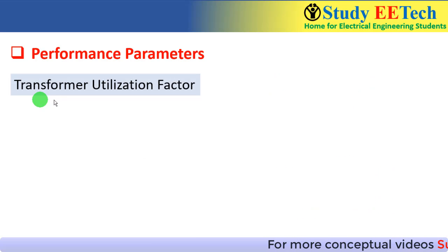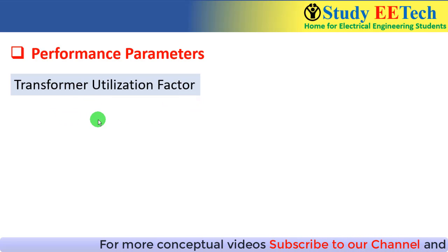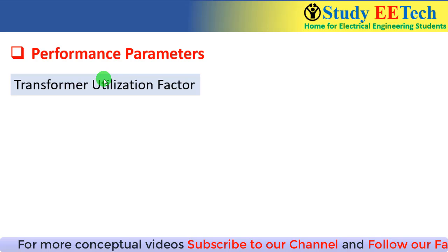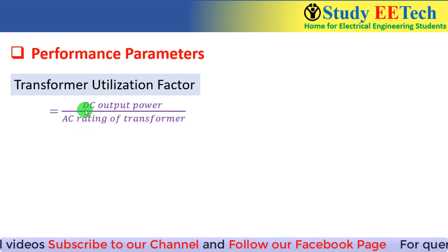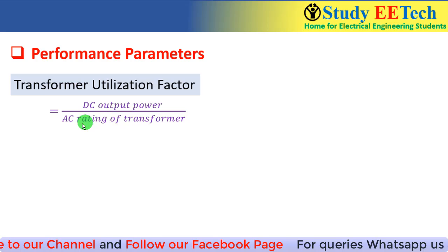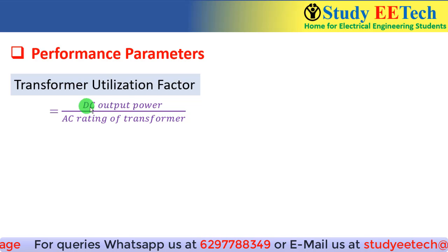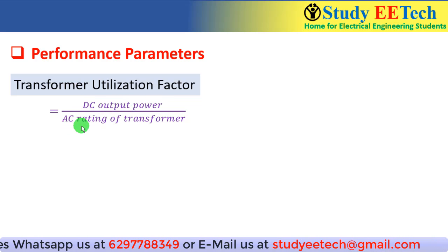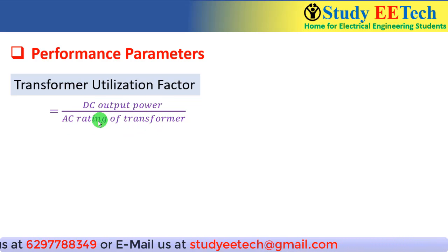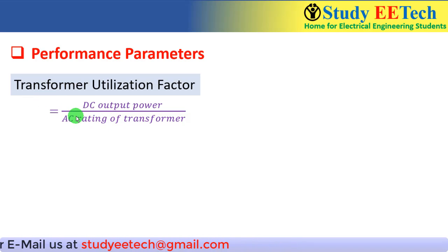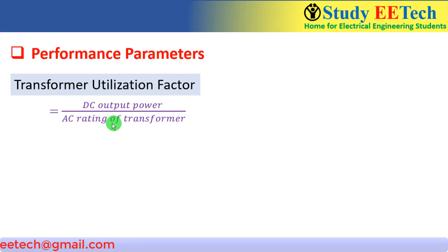Now we will learn what is transformer utilization factor. The definition of transformer utilization factor is quite similar to efficiency but not exactly the same. The definition is output DC power divided by the AC rating of the transformer. In case of efficiency it was output DC power divided by input AC power, but here the denominator is the AC rating of the transformer, and we know that the rating of a transformer is given in kVA.